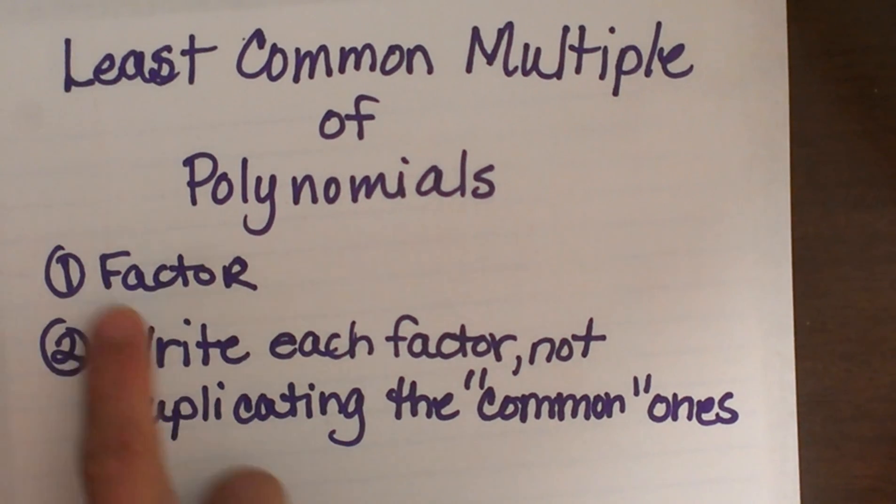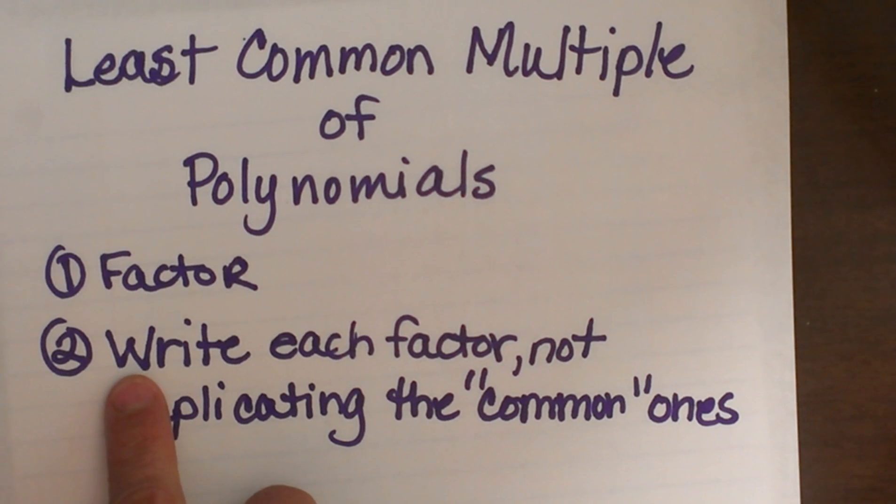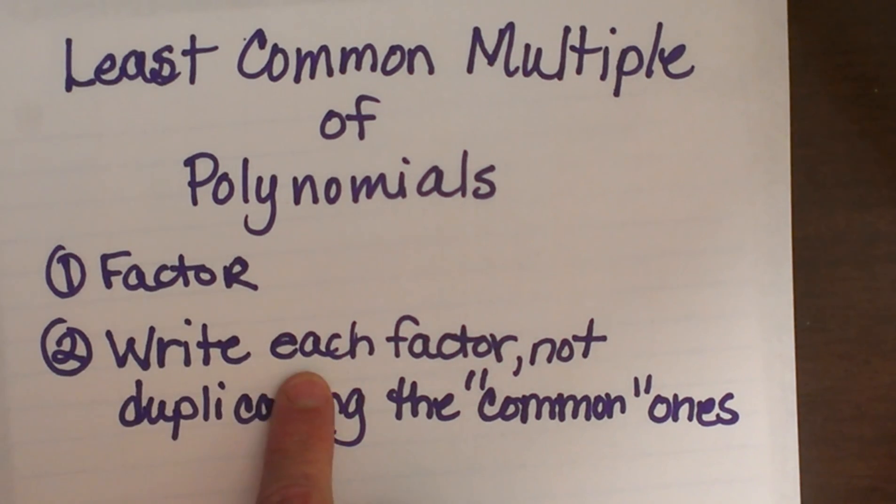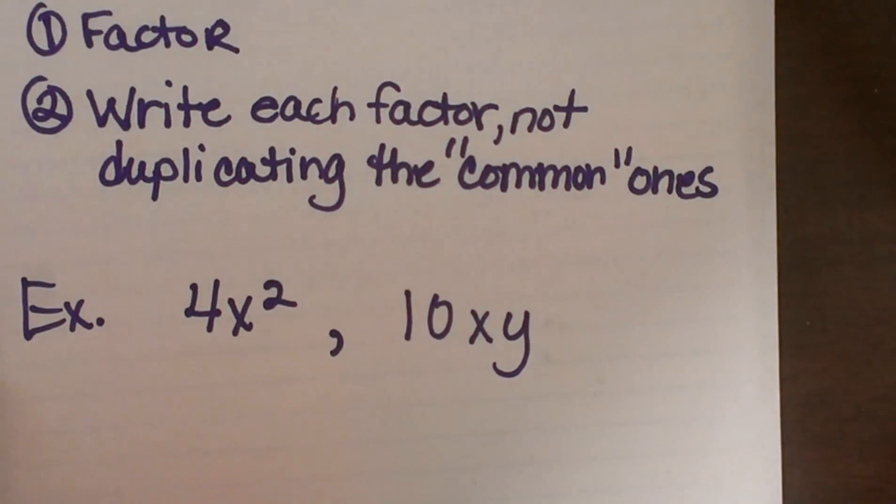We have a couple steps here. The first thing we are going to do is factor each term and then after we factor each one we are going to write each factor to be the common multiple, but we are not going to duplicate those common terms. So let's look at this first one.